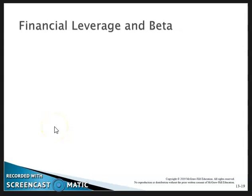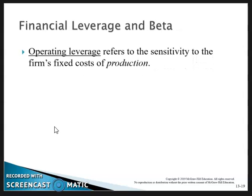Financial leverage and beta. Previously we talked about operating leverage, which refers to the firm's sensitivity to the firm's fixed cost of production. We saw how when we increase the fixed cost, it increased beta.